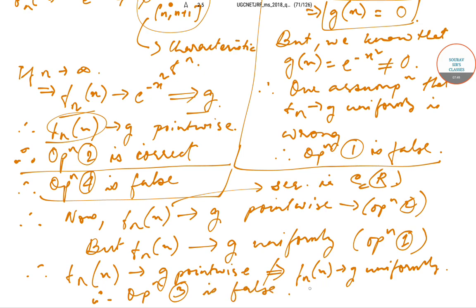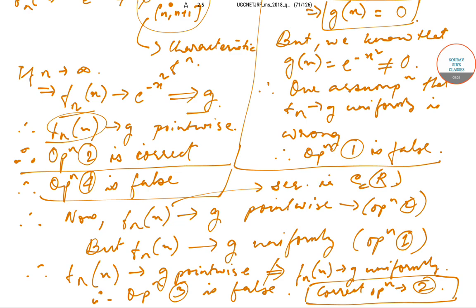So the correct option is option 2. Today we have solved question number 65 from the UGC NET question paper of June 2018. We will be solving the next questions in subsequent videos. Till then keep watching Sorpses classes videos for more solutions and content. Thank you very much.